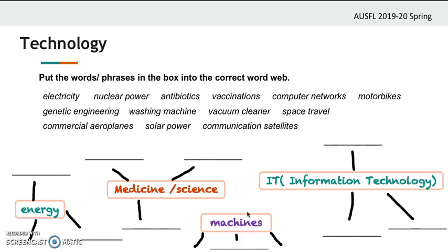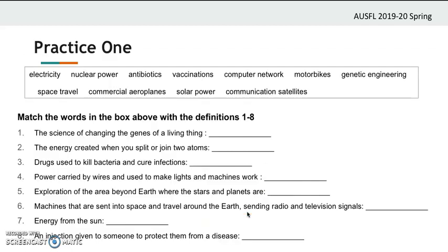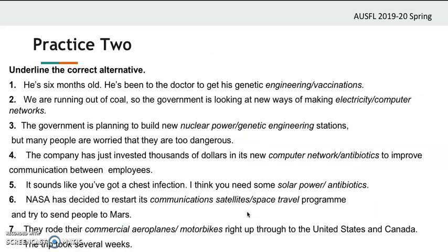Now pause the video and put these words into the correct category — can you read them aloud while doing it? Here are the answers. Let's do one more practice on this vocabulary. Pause the video and match the words with their definitions. Here are the answers. And here comes practice two — pause the video and underline the correct alternative. Here are the answers.